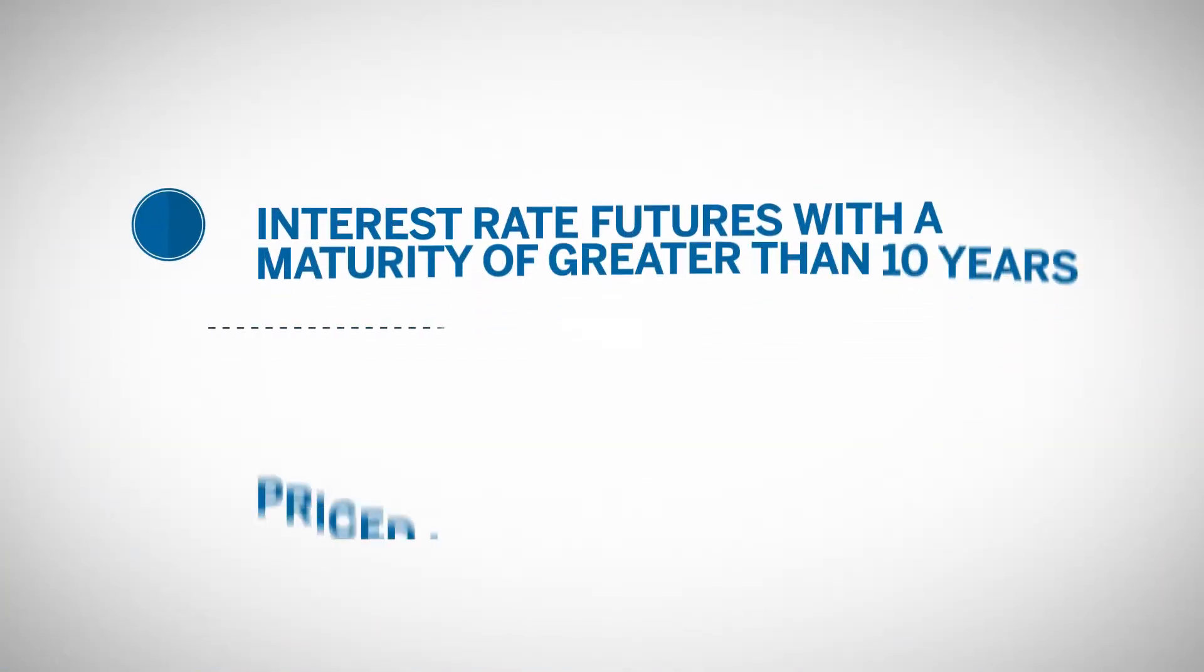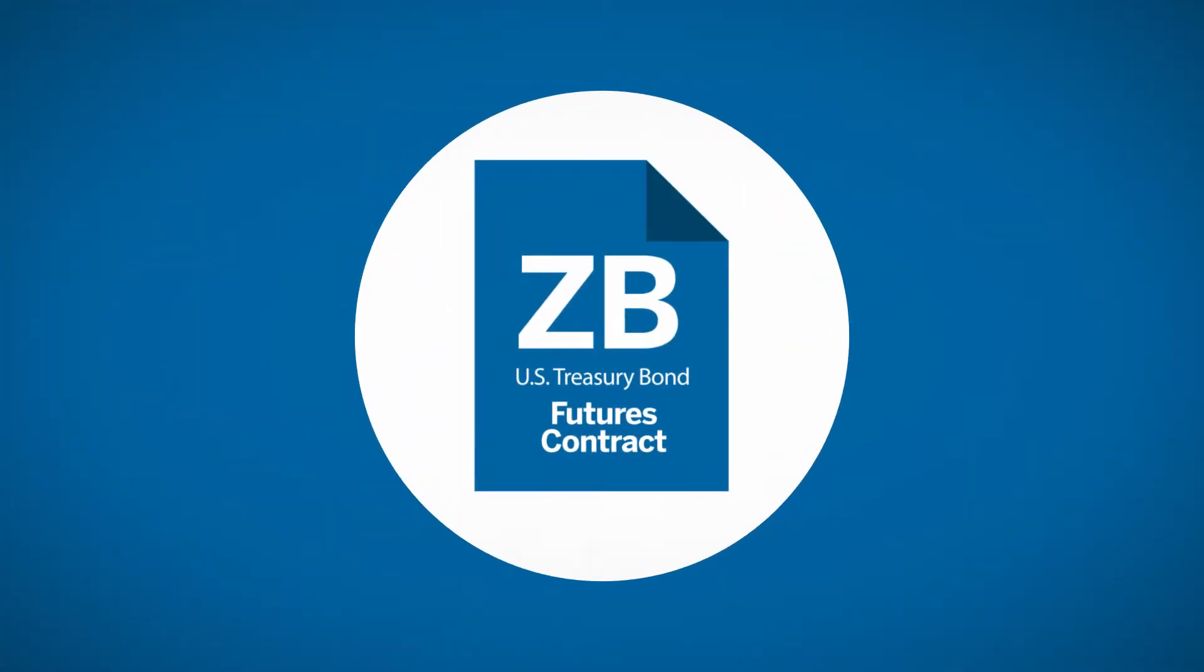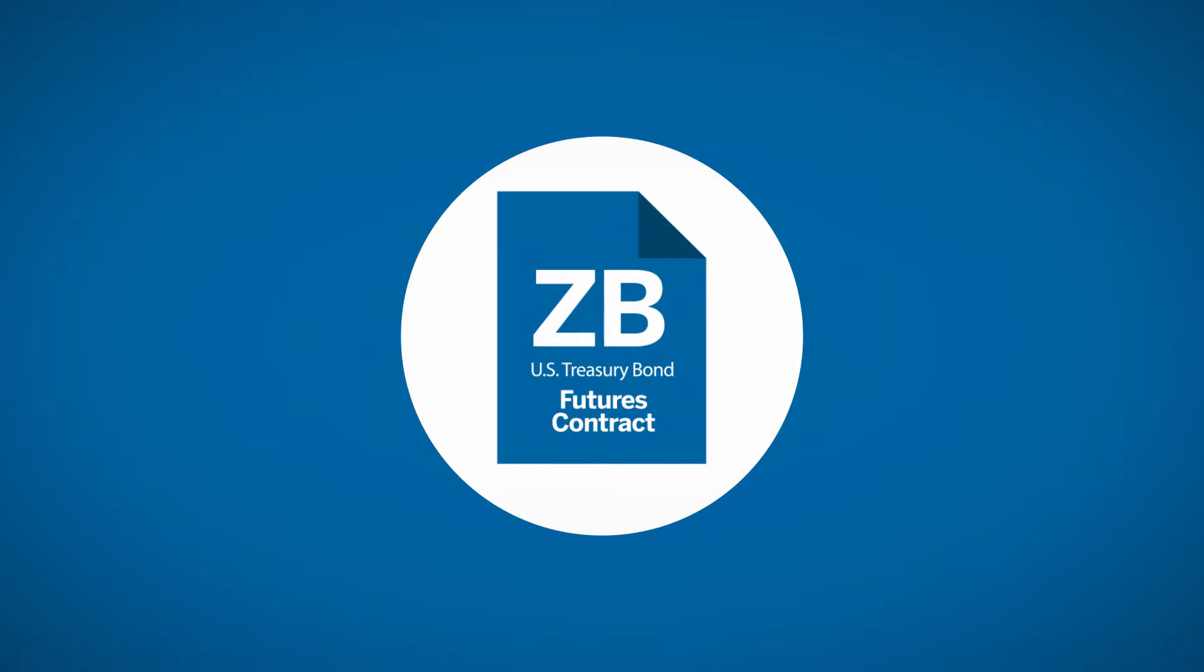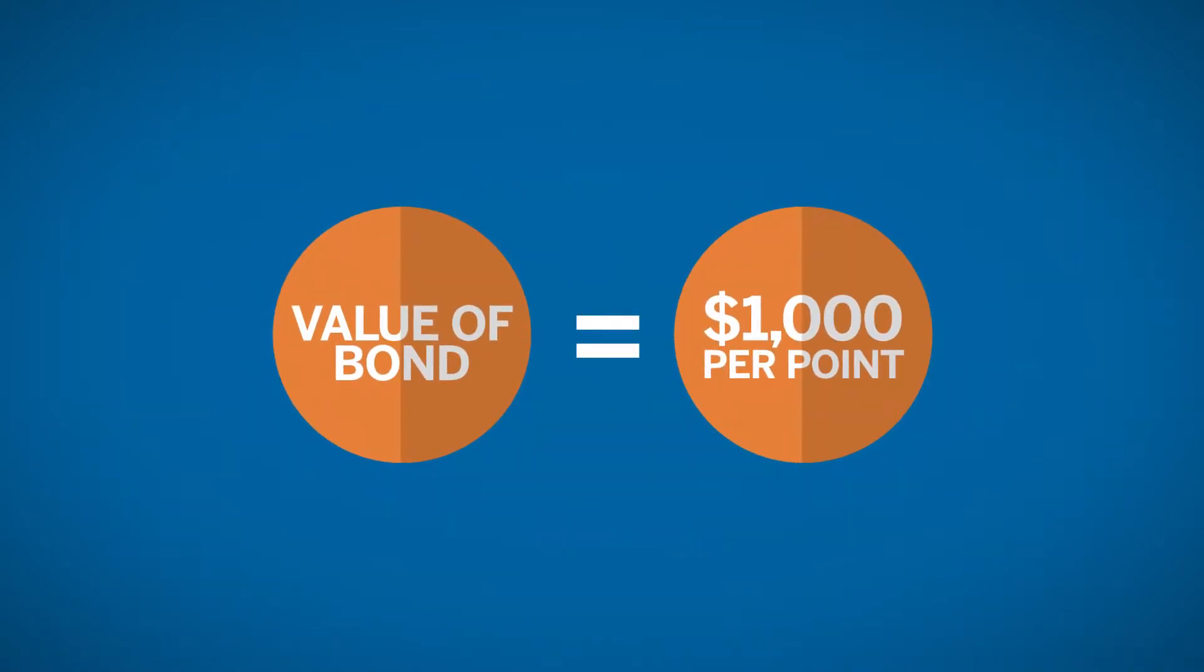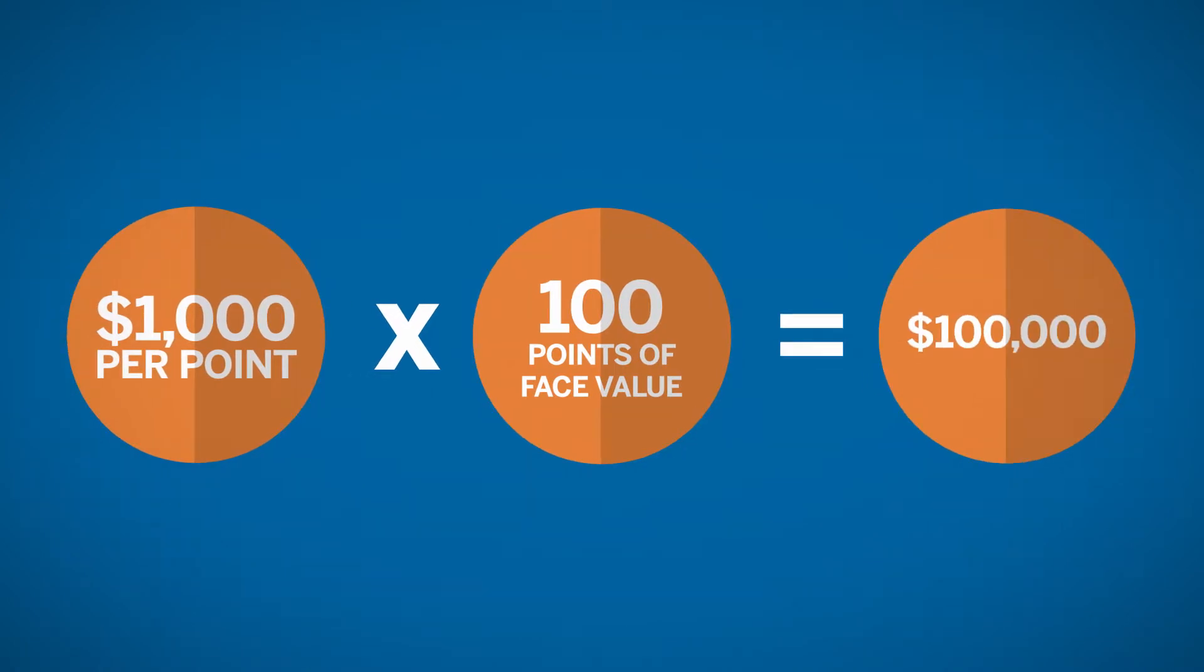Bonds are interest rate futures with a maturity of greater than 10 years. They are priced in terms of cost per face value. A contract like the 30-year bond futures, ZB, is worth $1,000 per point. They are priced based on a face value of 100 points for a total value of $100,000.